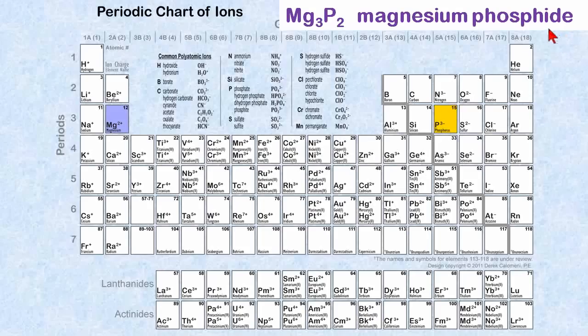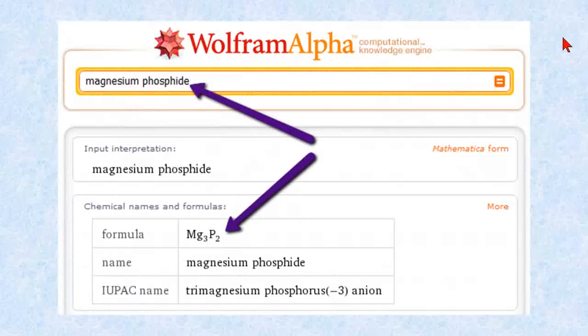Most of the ionic compounds end in an -ide. When I was constructing that last slide, I looked it up in Wolfram Alpha. And here it is. Mg3P2, magnesium phosphide.